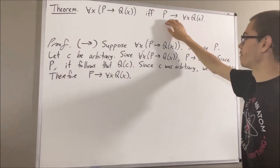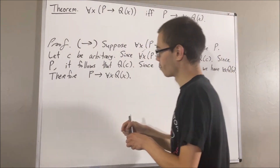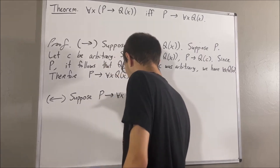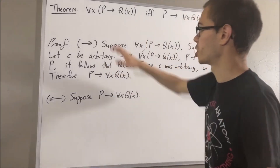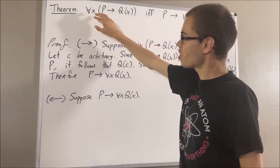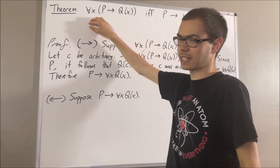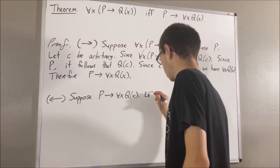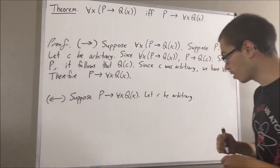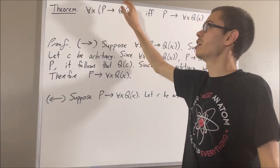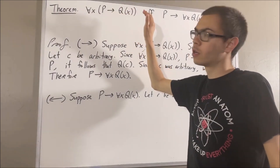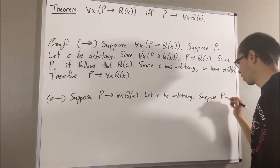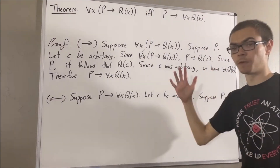Now we're going to show if the right side is true, then the left side is true. To do so, suppose P implies for all x, Q of x. And now we want to show for all x, P implies Q of x. Since we're trying to prove a statement about all objects, give me an arbitrary object — I'll call it r. From here, we want to show that P implies Q of r. So let's suppose that P is true. And now we want to show Q of r is true.